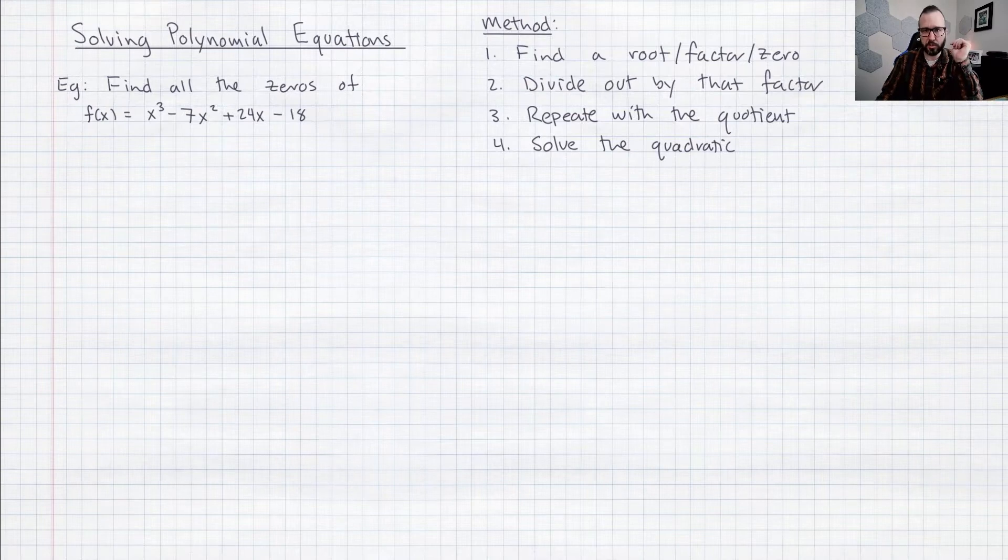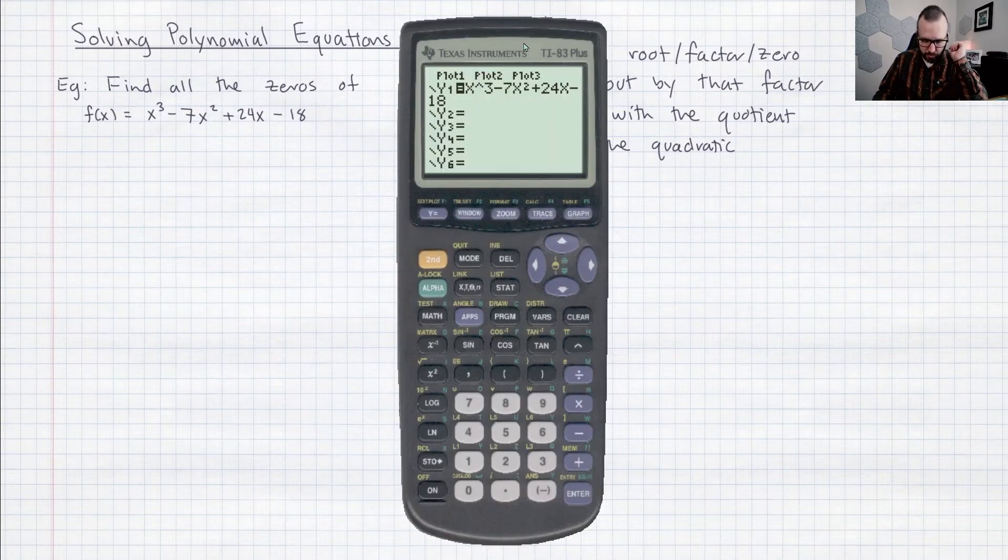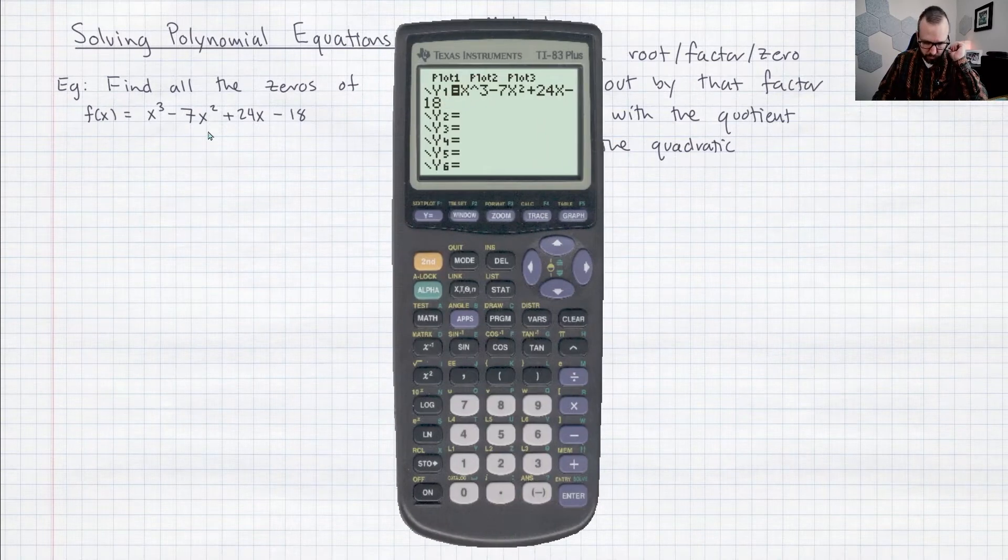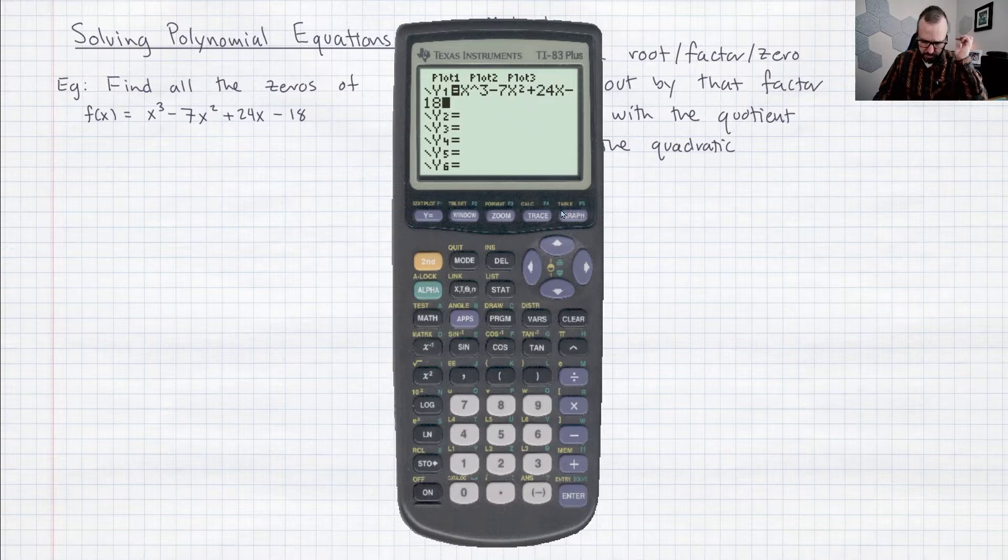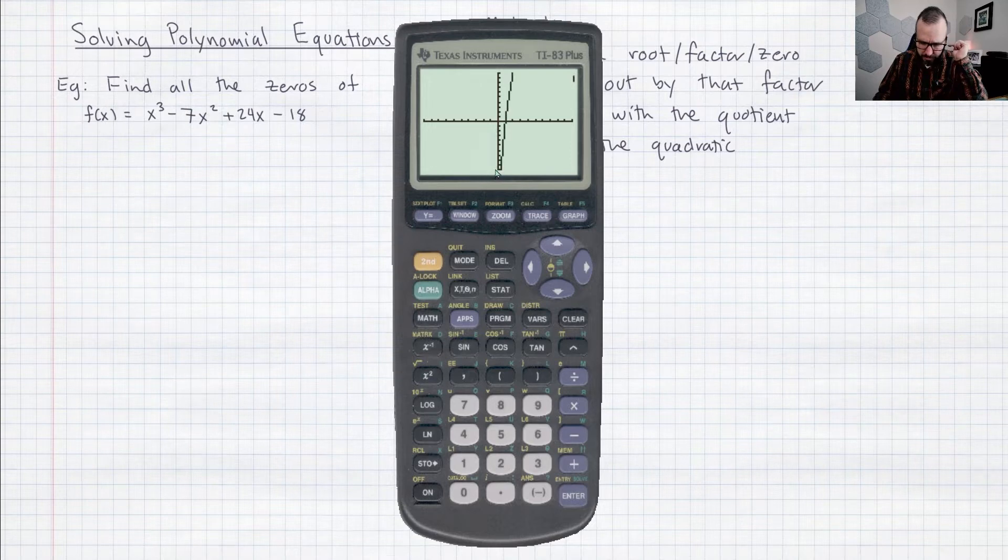So let me jump in. I'm going to solve the one that's here on the board. Okay so I just plugged it into my calculator here just right as it appears. I'm just checking did I plug it in right? Looks good to me. Minus 18. Okay and then when we hop over to the graph it shows us a little piece of the graph and it looks like this polynomial function does cross right at x equals one.